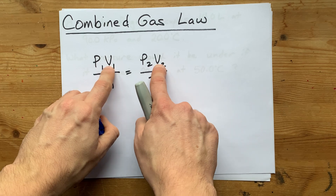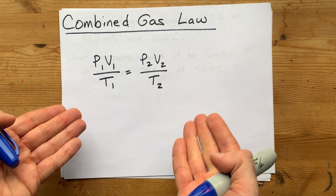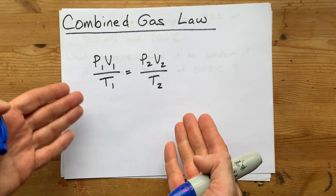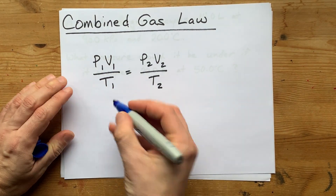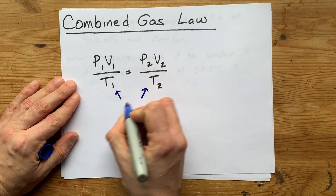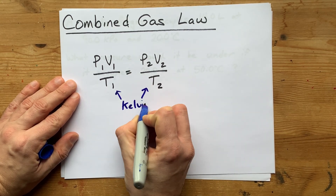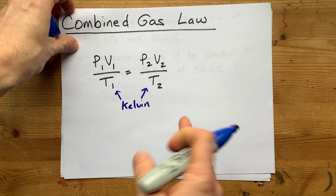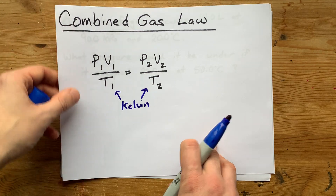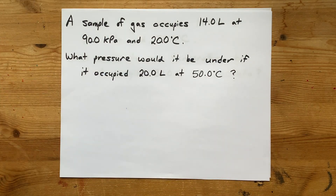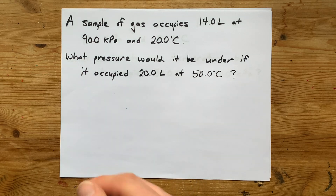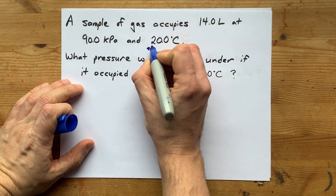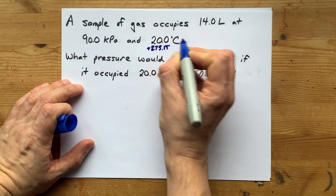As long as you're using the same units for volume on both sides, that's also okay — you can use milliliters, decimeters cubed, centimeters cubed, whatever. Temperature, on the other hand, has to be in Kelvin for this formula to work. That's because Kelvin is the form of temperature that measures the absolute amount of heat. So the very first thing we'll have to do is convert those temperatures to Kelvin, which we do from Celsius by adding 273.15.